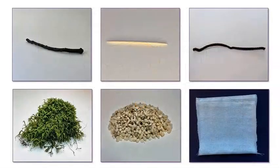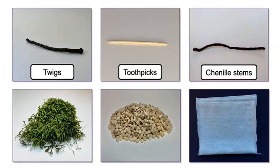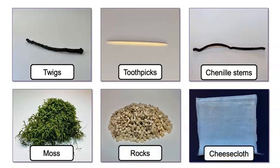But before we draw a design, we need to decide which materials we will include. Here are some materials I gather to use for our model. Twigs, toothpicks, Chenille stems, moss, rocks, and cheesecloth. Look around your house. Do you have different materials that you could use? If so, you can include those in your design as well.